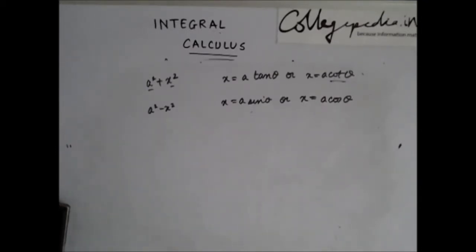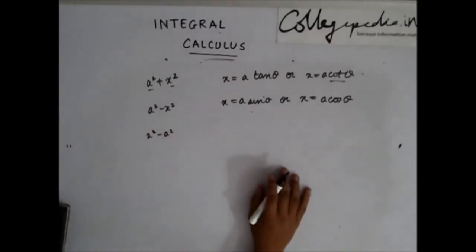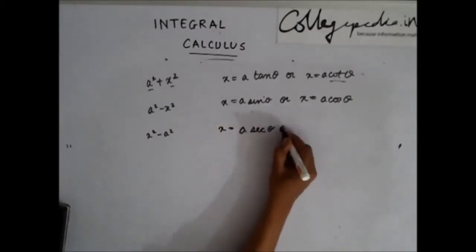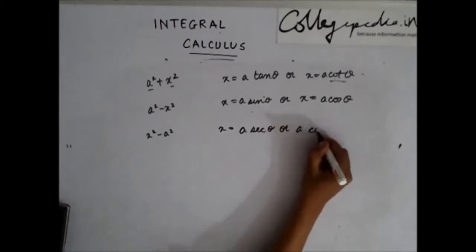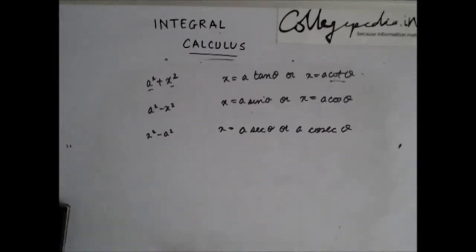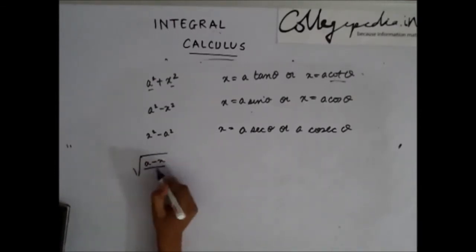If you have x² - a², you could put x = a secθ or x = a cosecθ. The same reasoning applies: if you put secθ you get a²(sec²θ - 1), which is a² tan²θ. If you put cosecθ you also get a² tan²θ.